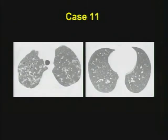Case number eleven: a pair of images from a high-resolution CT scan. Notice the anatomic distribution of the abnormality. Characterize the lesions by their margins, their shape, their size, their anatomic distribution. So multiple cystic lesions on a high-resolution CT — what is your differential?